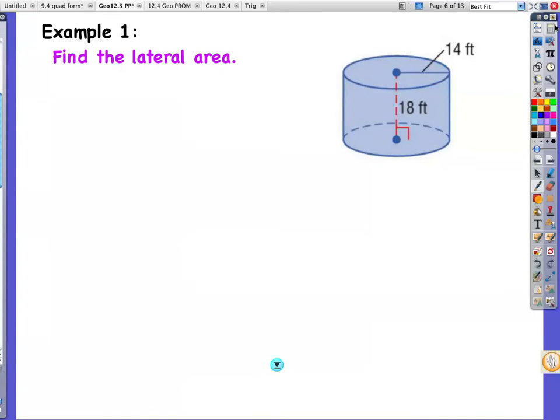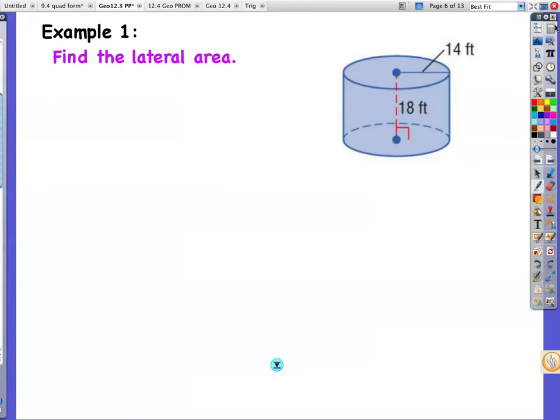So to start off with, we're going to find the lateral area of this beautiful cylinder. We're going to use the formula, lateral area equals 2 pi r, that's your circumference, times the height. The lateral area is just the size of this. So then I'm going to take 2 times pi times the radius, which is 14, times the height, which is 18.